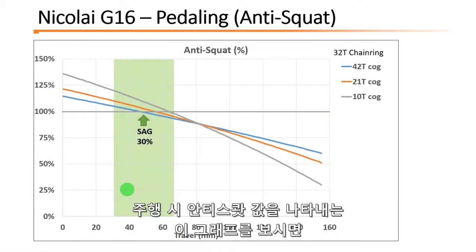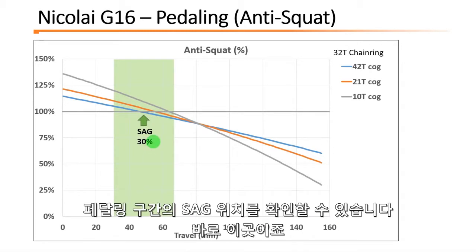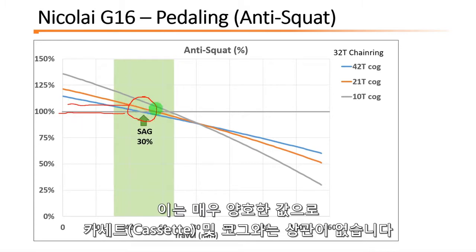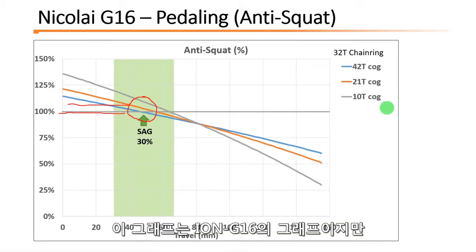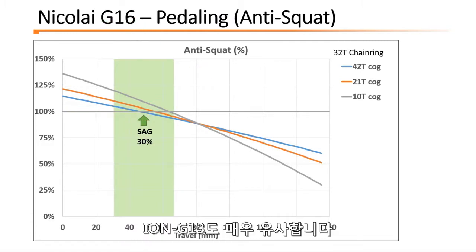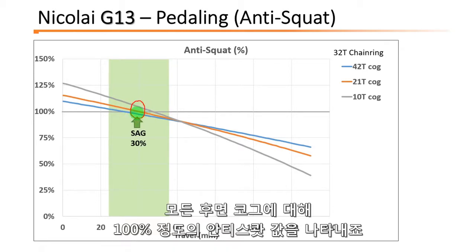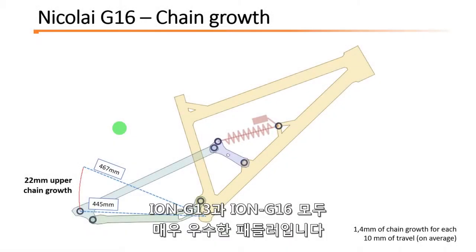As you can see in this graph, which represents the anti-squat values across the travel, at the sag position on the pedaling zone, the anti-squats are around 100% — very good anti-squats independently of the cogs of the cassette. This graph is for the G16, but the G13 is very similar: 100% anti-squat for every rear cog. So both G13 and G16 are very good pedalers.